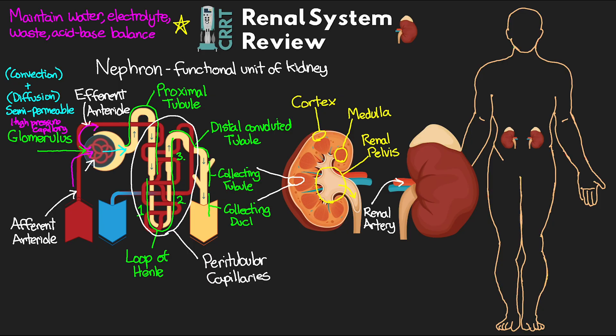Blood that is left with large molecules and proteins exits via the efferent arteriole. These large molecules and proteins provide oncotic pressure, allowing water and solutes to be reabsorbed in the peritubular capillaries. The blood exiting via the efferent arteriole is still oxygenated, and in addition to entering the peritubular capillaries, it also perfuses the kidney itself — which is why we ultimately see the blood becoming deoxygenated as it exits into a vein.